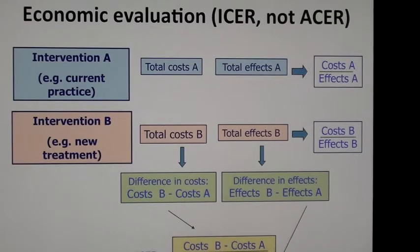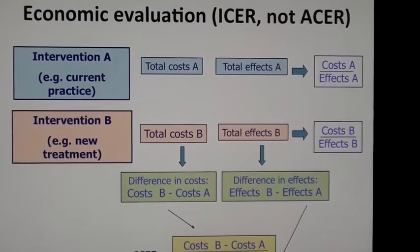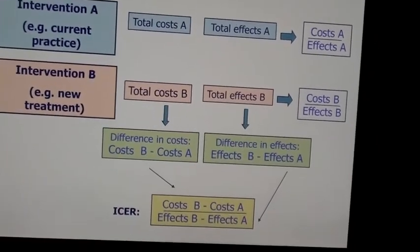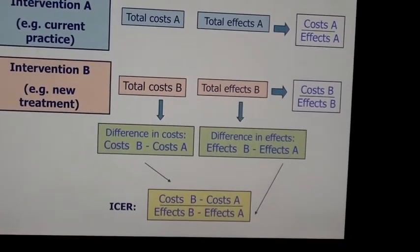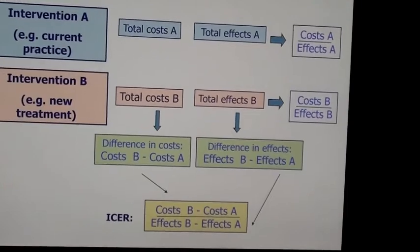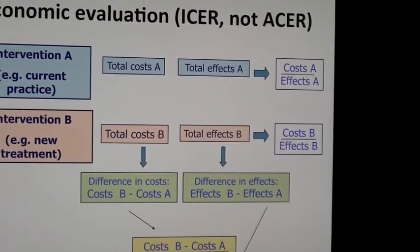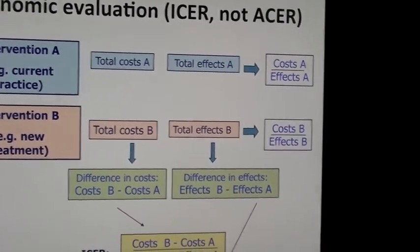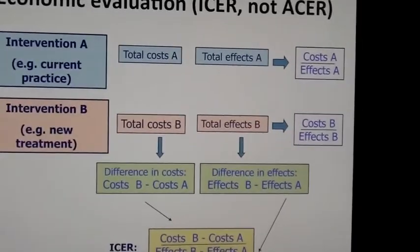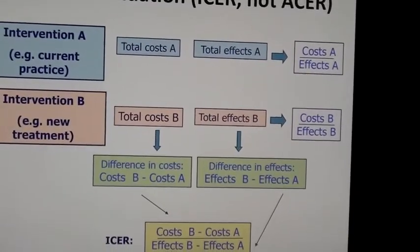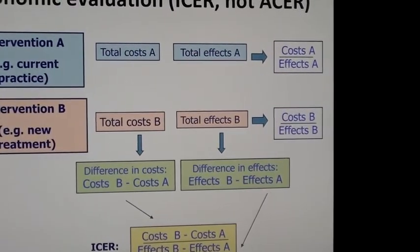So we have total costs A and B, and what we want to calculate is the ICER — the incremental cost per incremental effect, shown at the bottom. We do not want to stop at calculating the average cost-effectiveness ratio for A and B.